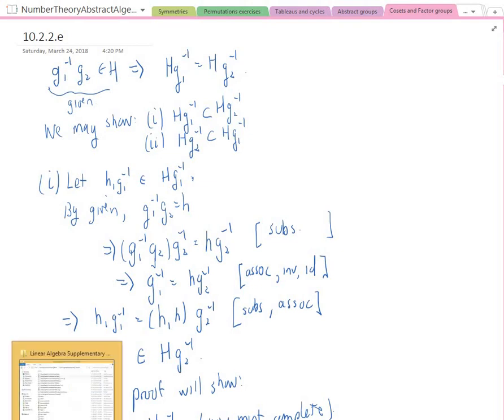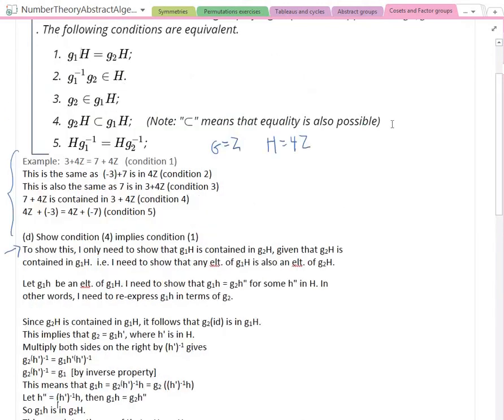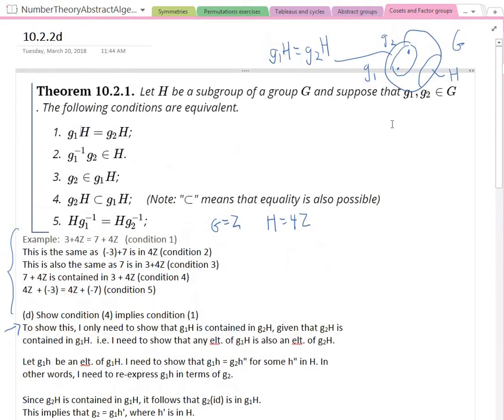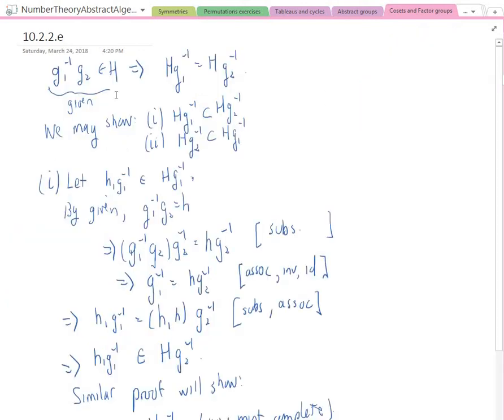All right, let's go back here in just a moment to these equivalent conditions. Now we're wanting to show another pair of equivalent conditions, and the one we're going to show now is that G1 inverse G2 is in H. That's condition 2, so let's verify that.